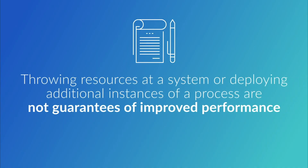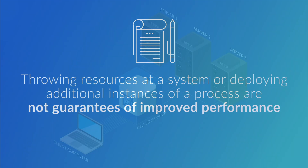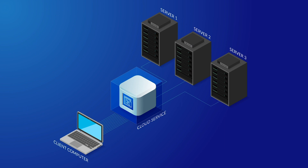While it may be tempting to do so, simply throwing resources at a system or deploying additional instances of a process are not necessarily guarantees of improved performance. It's important to consider key application design strategies when designing an autoscale strategy. Ensure that the system is designed to be horizontally scalable, and avoid designing solutions that require code to always run in a specific process instance.